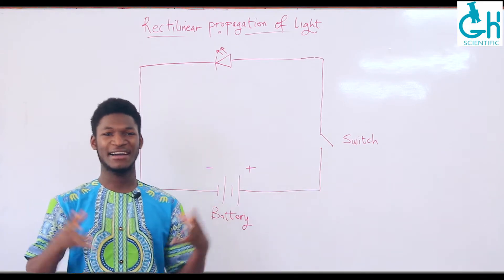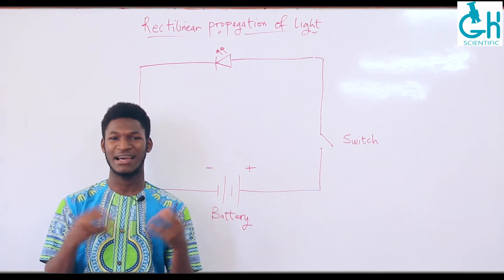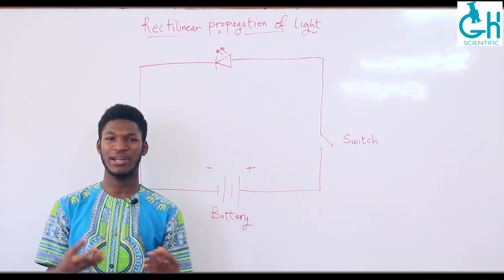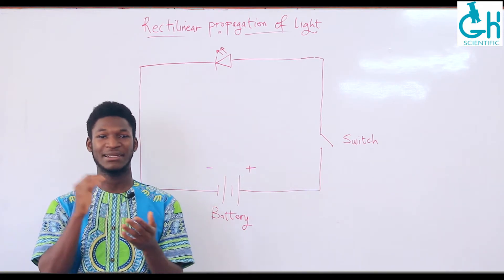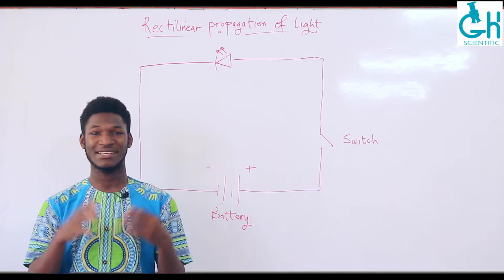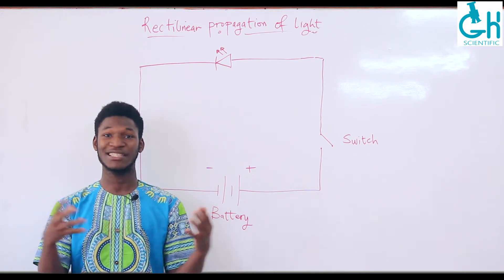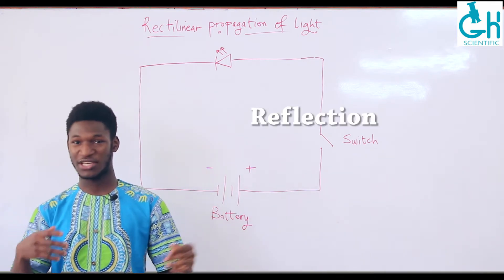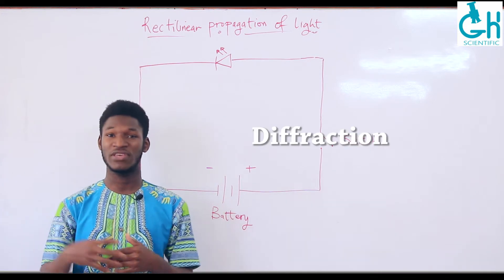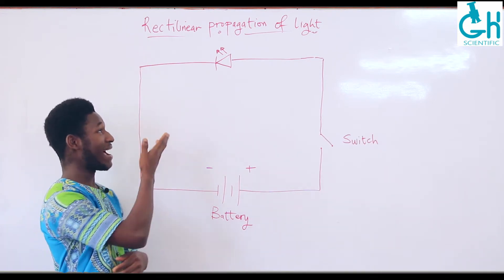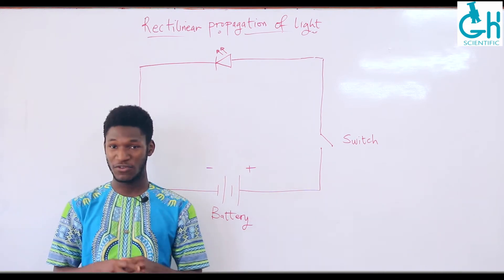So what is this rectilinear propagation of light, and what is so fascinating about it? One thing you have to realize is that underlying most of the successful practical explorations of light properties — reflection, refraction, diffraction — all of these depend on the fact that light is able to travel in a straight line.